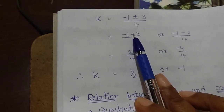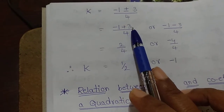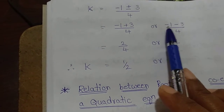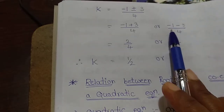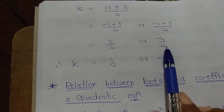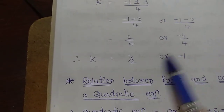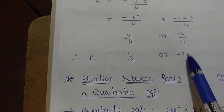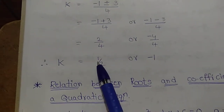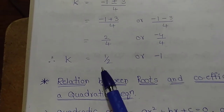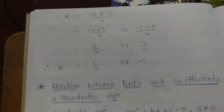So k equals minus 1 plus 3 by 4, or minus 1 minus 3 by 4. That gives k equals 2 by 4 or minus 4 by 4. Therefore the values of k are 1 by 2 or minus 1.